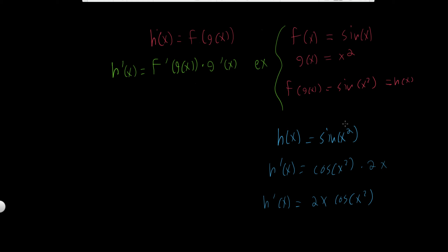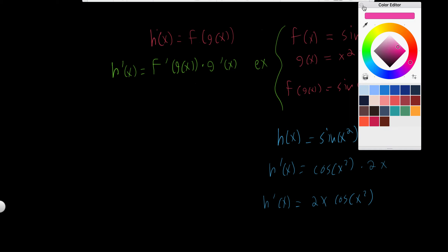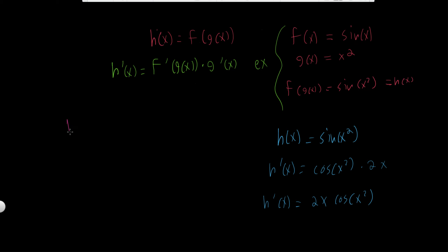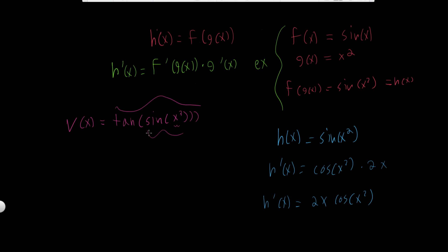So our answer for h prime of x is 2x cosine of x squared. Notice that if we have a function inside a function, we cannot just take the derivative of the outer function — we have to use the chain rule. Let's do one more example. We'll define v of x as tangent of sine of x to the third. In this case there are three functions nested inside each other: the outside function is tangent, the middle is sine, and the innermost is x to the third.